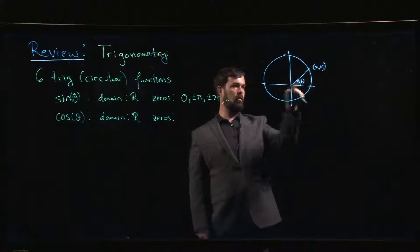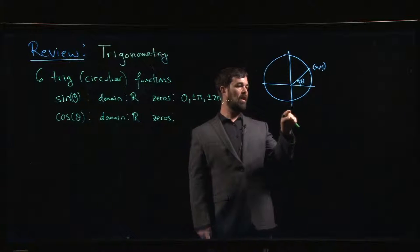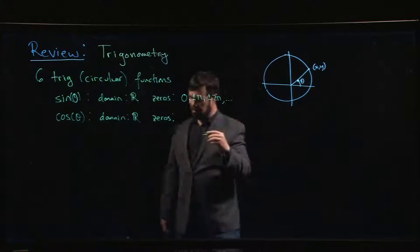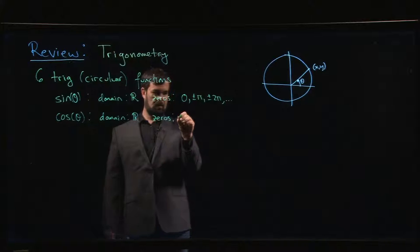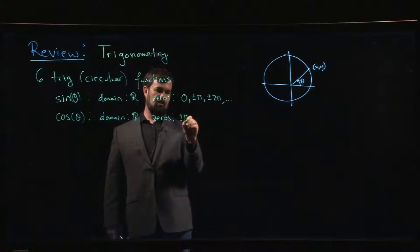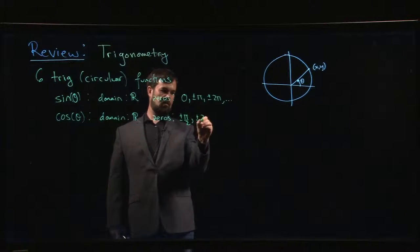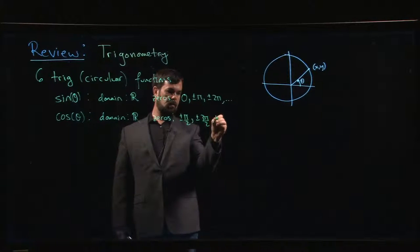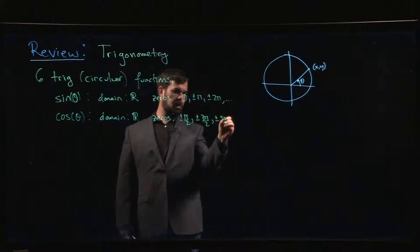Sine equals zero when the y-coordinate is zero, so at the x-intercepts. Cosine equals zero at the y-intercepts, so at plus or minus pi over 2, plus or minus 3pi over 2, plus or minus 5pi over 2, and so on — all the odd multiples of pi over 2.